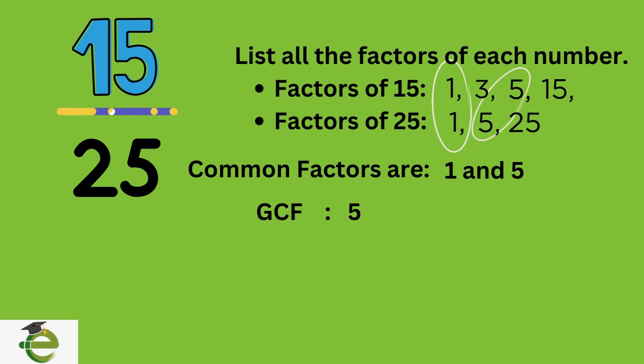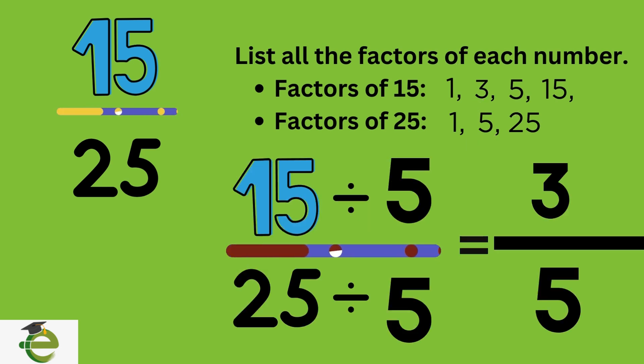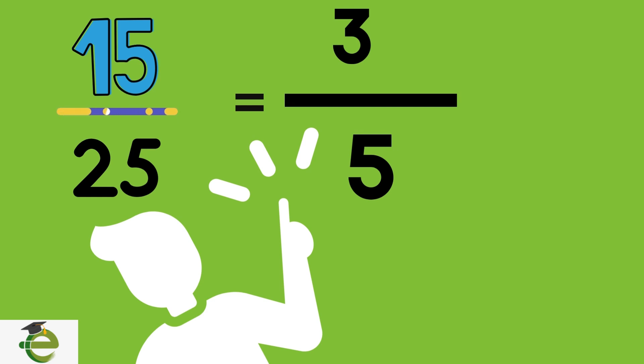Divide both fifteen and twenty-five by five. The simplified fraction is three-fifths. Remember, simplifying fractions doesn't change their value, it just makes them easier to work with.